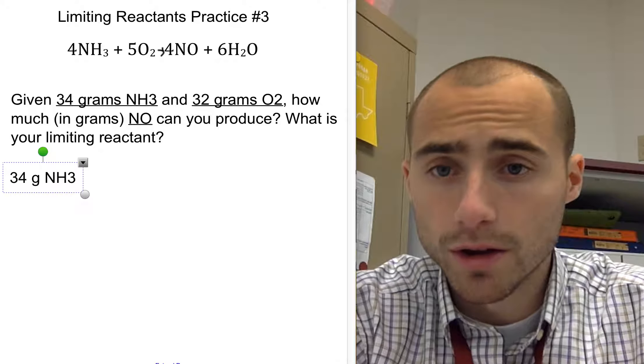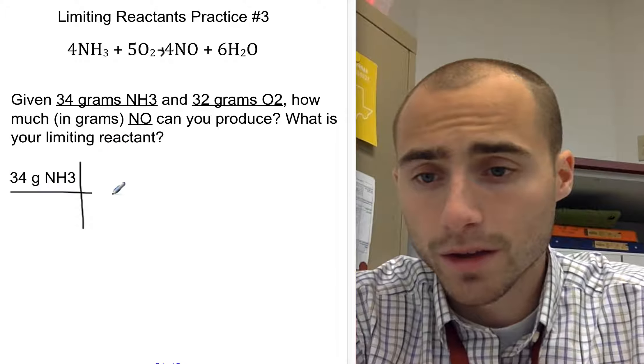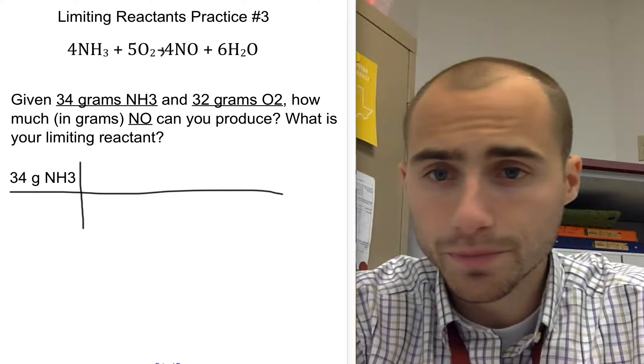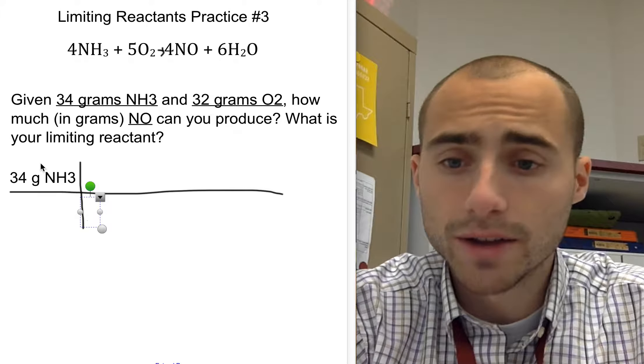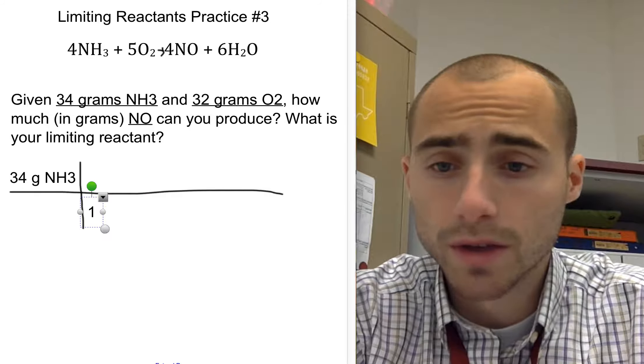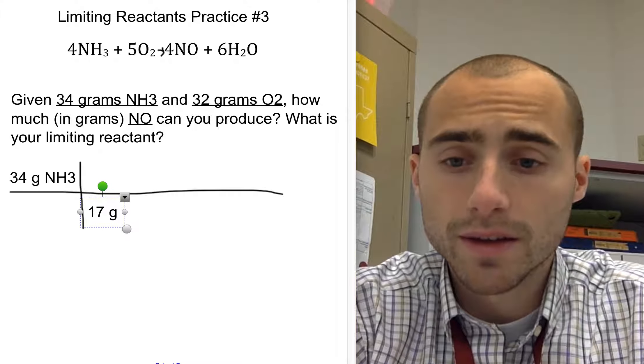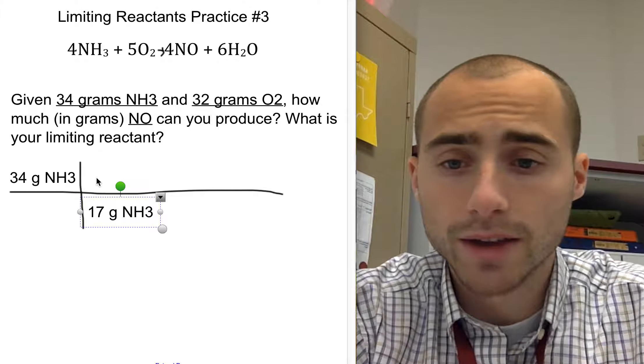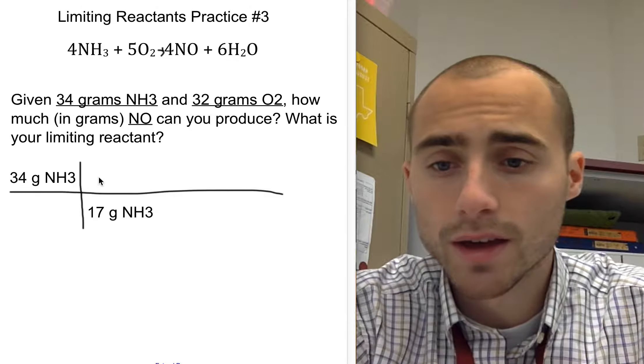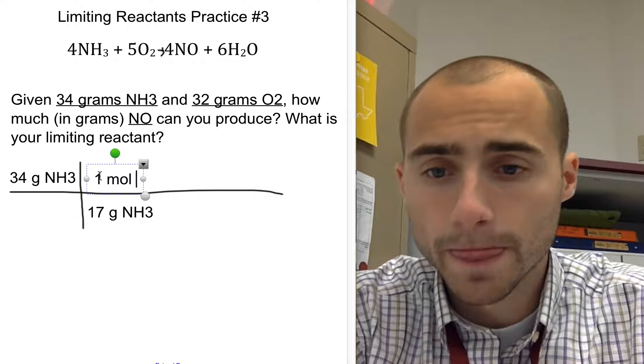So a little bit longer of a dimension, certainly doable. So I set that up, 34 grams NH3. First, I have to know the molar mass of NH3. We're going from grams to moles. That's from your pink sheet, 17 grams NH3. That is the molar mass of NH3. One N plus three H's is equal to one mole NH3.